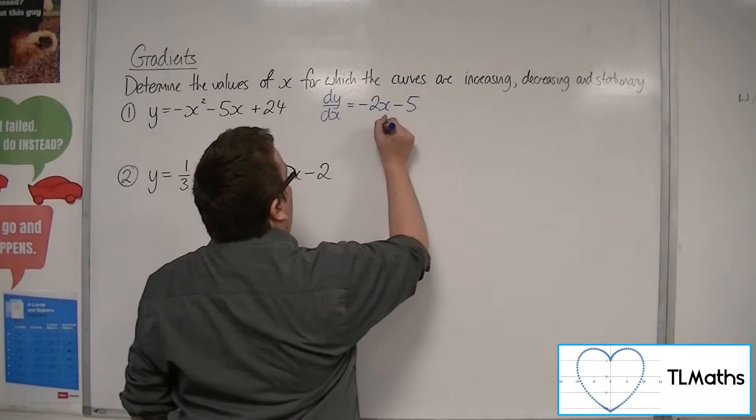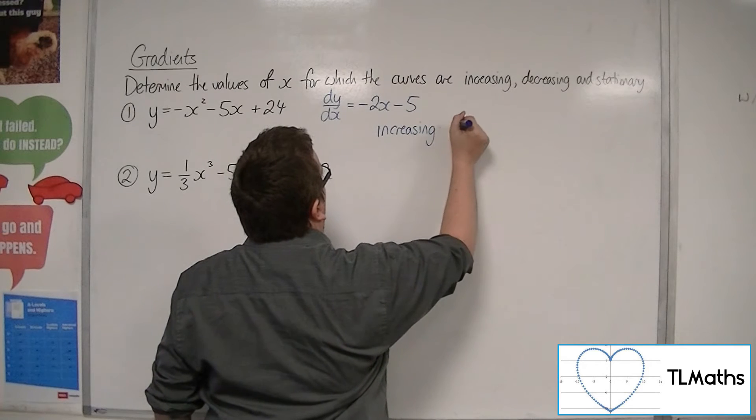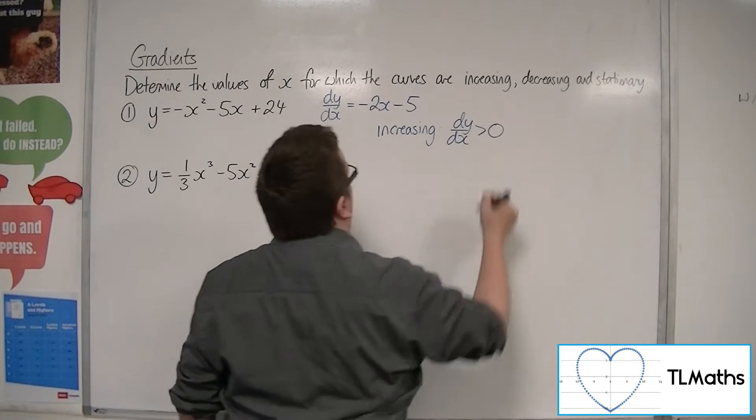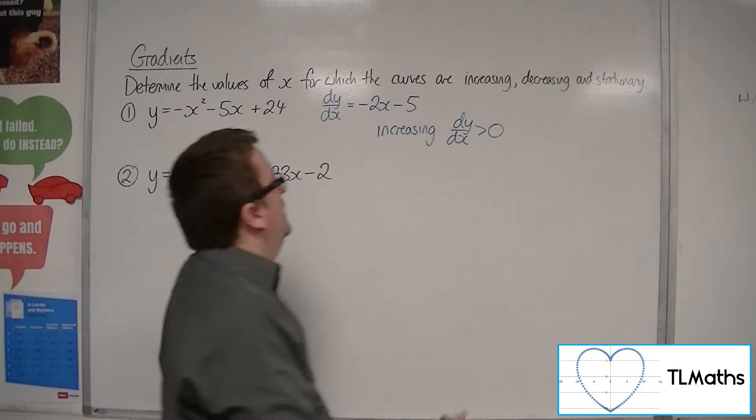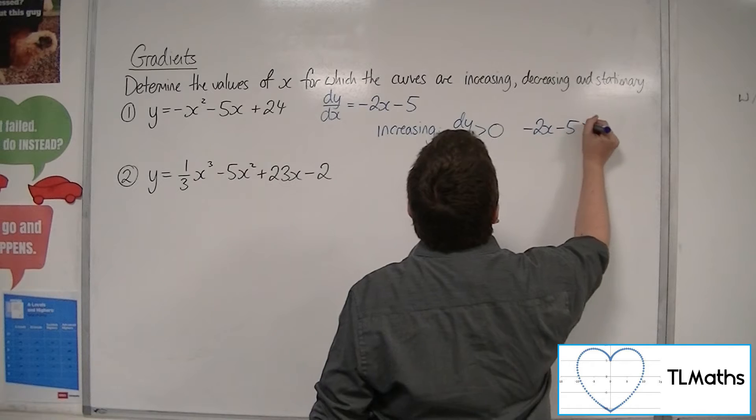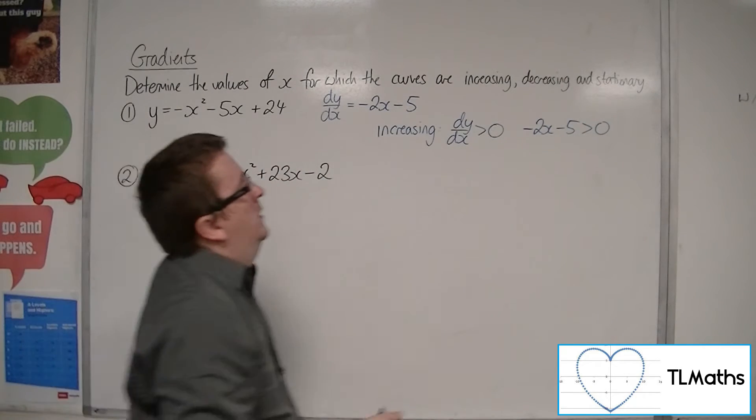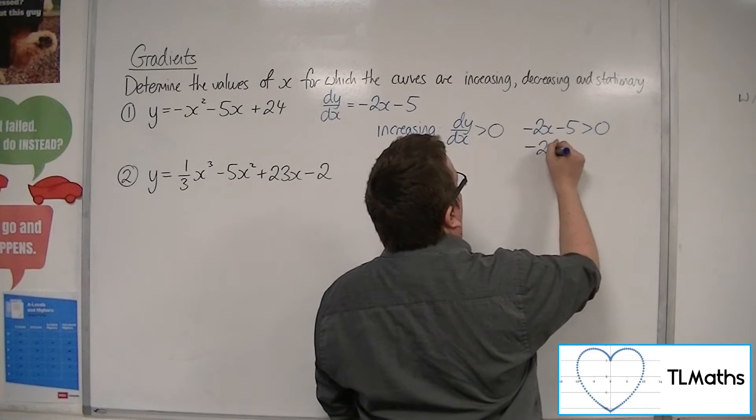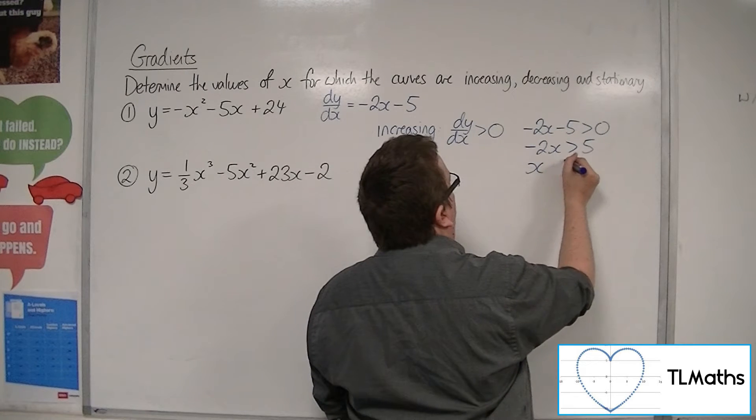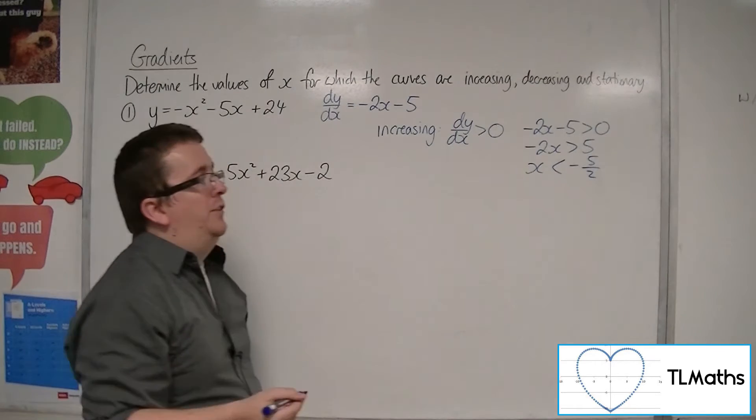Now, a curve is increasing when dy by dx is positive, when it's greater than 0. So, I want to solve the inequality minus 2x minus 5 is greater than 0. So, if I add 5 to both sides and divide both sides by minus 2, I get x must be less than minus 5 halves.